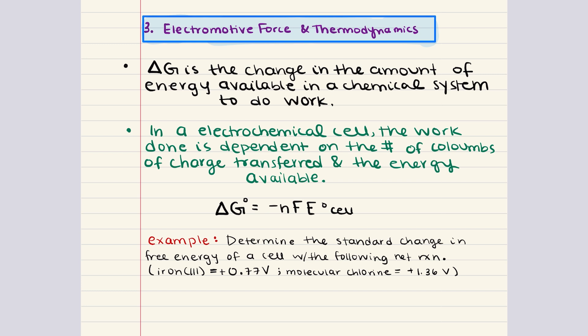For electrochemical cells, the relationship between Gibbs free energy change and EMF is given by this equation, where delta G is the standard change in free energy, N is the number of moles of electrons exchanged, F is the Faraday constant, and E cell is the standard EMF of this cell. Keep in mind, if the Faraday constant is expressed in Coulombs, then delta G must be expressed in joules and not kilojoules.